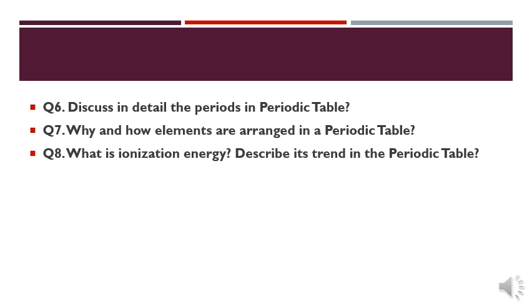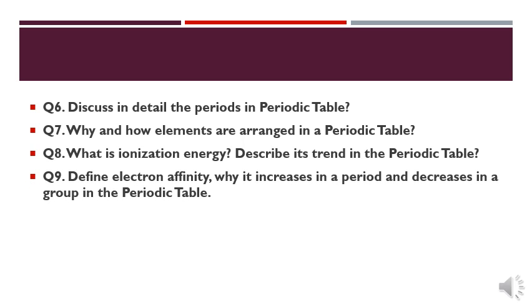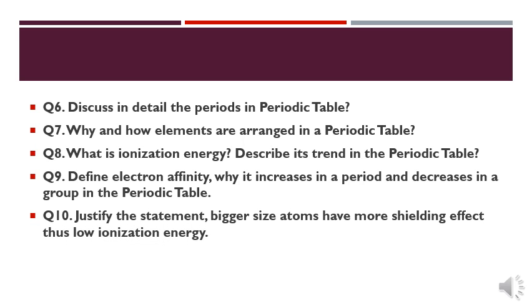That has been previously discussed. Define electron affinity — why it increases in a period and decreases in a group. Also justify the statement: bigger-sized atoms have more shielding effect, thus low ionization energy. As atomic size increases, ionization energy decreases because of the addition of shells. Justify this answer with complete reasons.